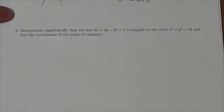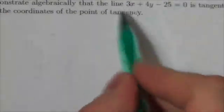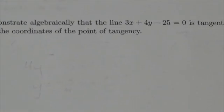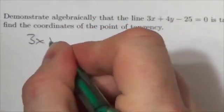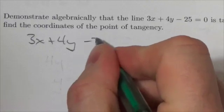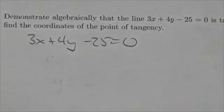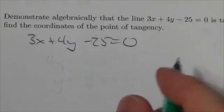Okay, let's zoom in a little bit here and get to work. So what we're going to do is end up substituting the line into the equation there. So let's take the line here as 3x plus 4y minus 25 equals zero.